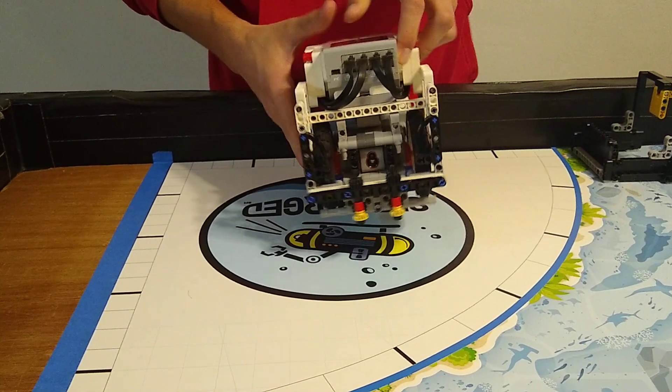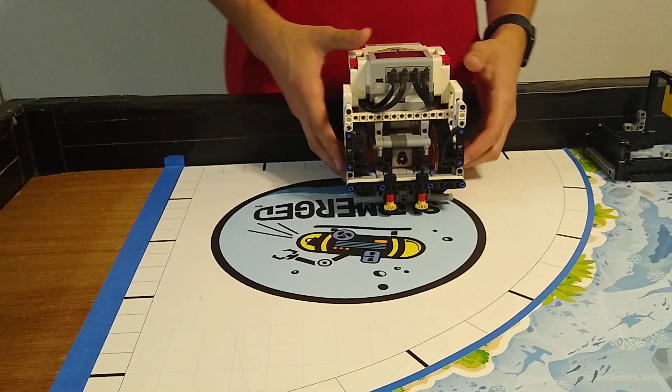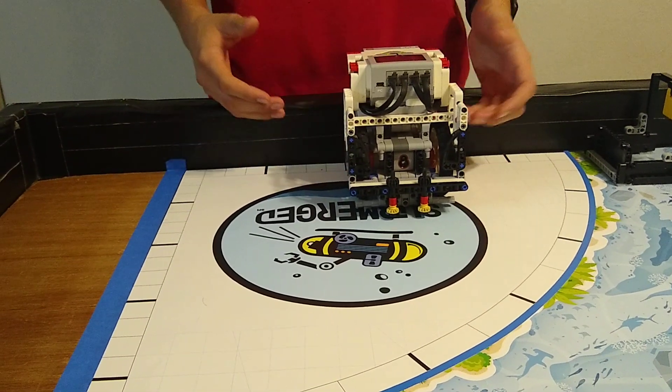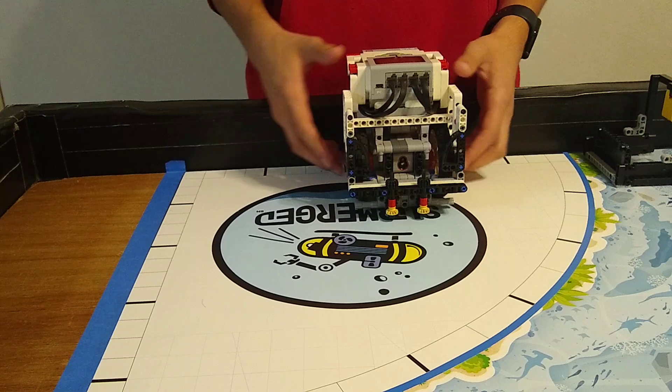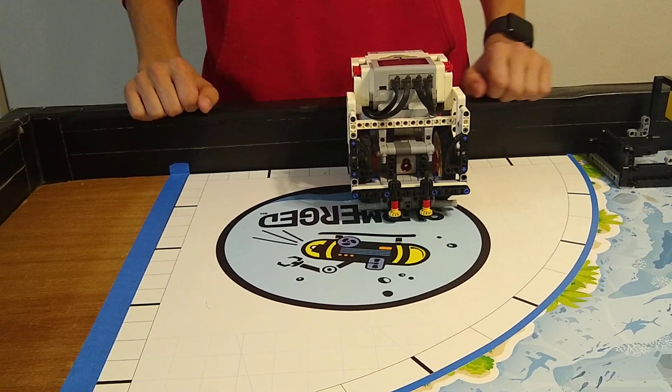When we line up our robot, we always use the exact same line up almost every time. This helps us because it makes us only have to remember one line up, so it makes it easier for us to always get the same line up accurately.